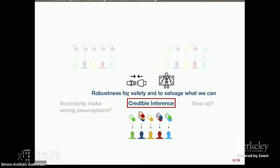This puts us in a methodological bind. I'll talk about work that fills out a middle path, using robustness for two purposes: first, for safety in view of violated assumptions, and second, for estimation — to salvage what we can from imperfect data and strengthen our estimation procedures.